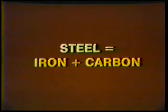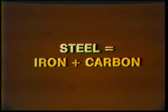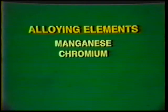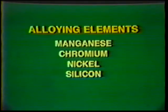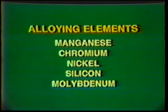Steel is a mixture of iron and carbon, along with other alloying elements. Some of these other alloying elements which can be added to steel include manganese, chromium, nickel, silicon, molybdenum, and so forth.